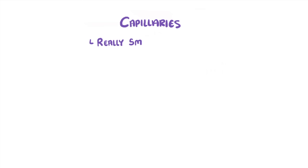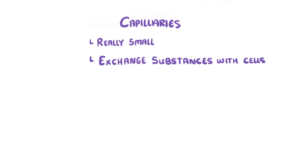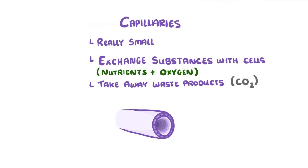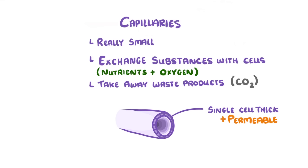These vessels are really small and come into close contact with all of the cells in our body. Their role is to exchange substances with our cells, giving them useful nutrients and oxygen, and taking away waste products like carbon dioxide. If we take a closer look at a single capillary, we can see how they're adapted to this function. For example, their walls are only a single cell thick, and they're also permeable, which means that substances can easily diffuse through them.